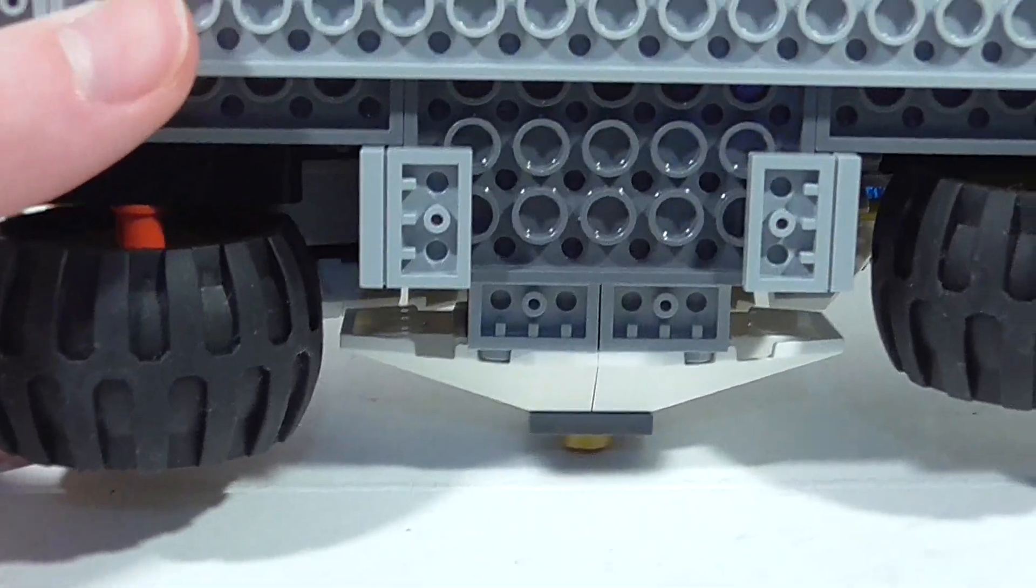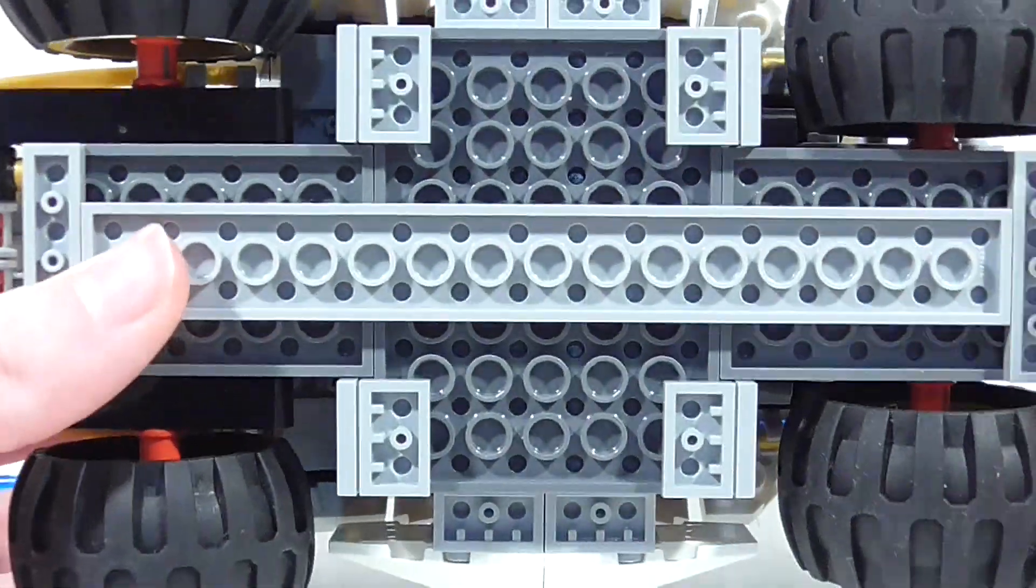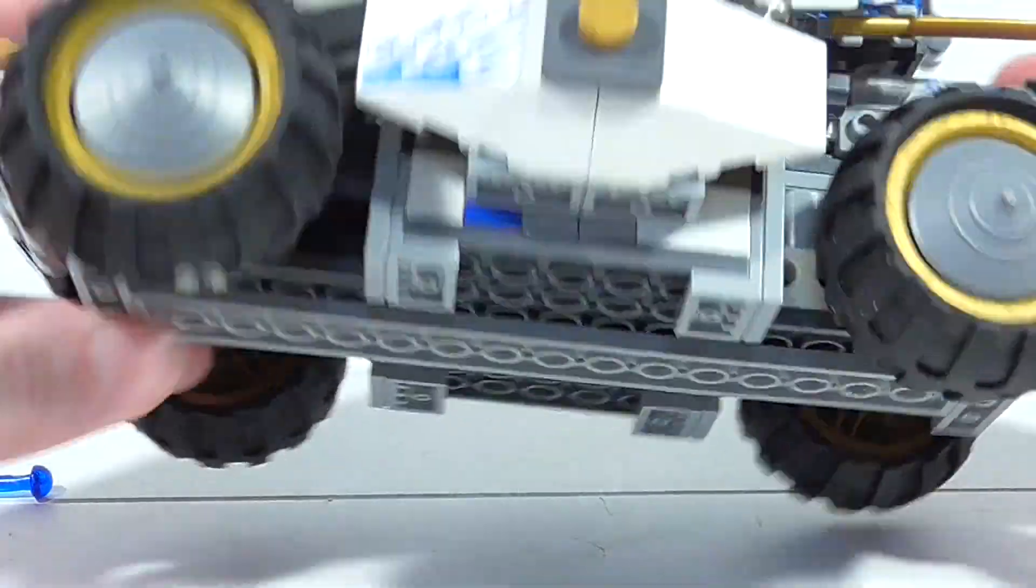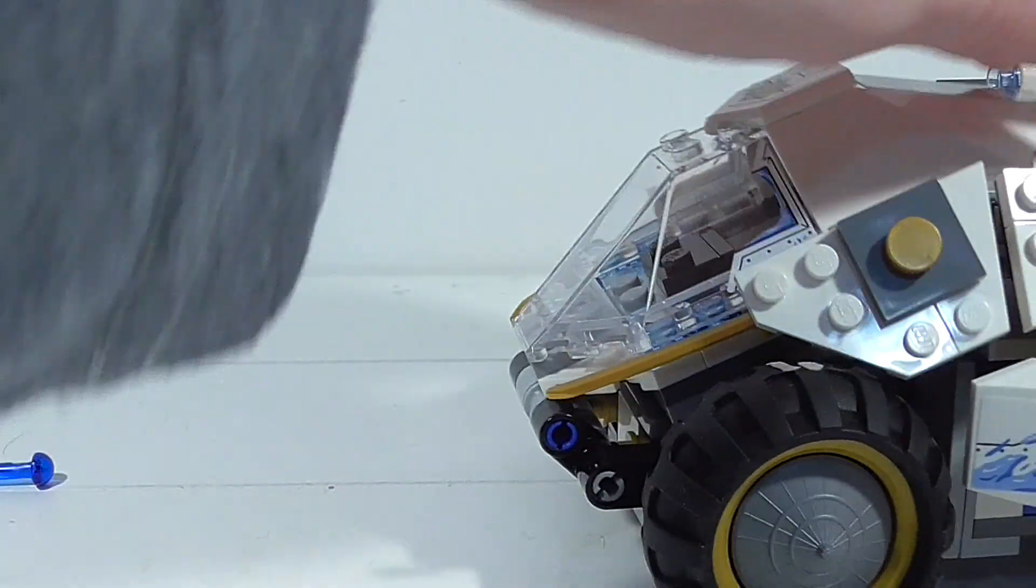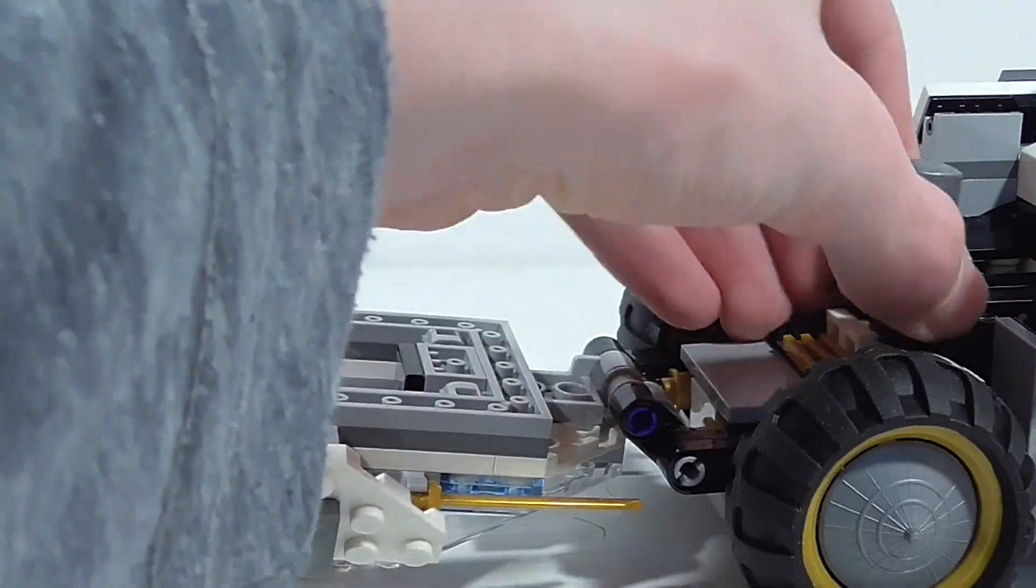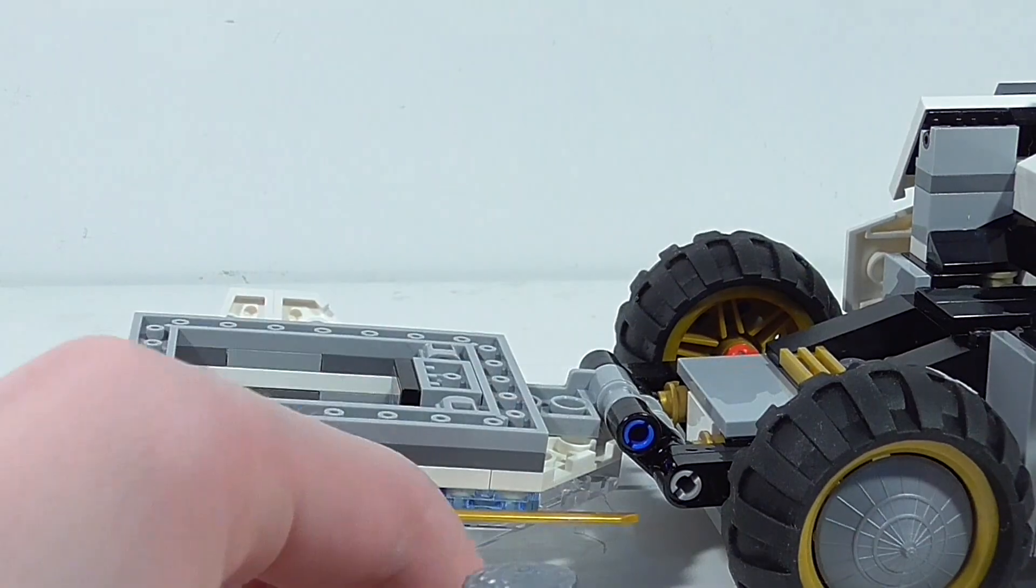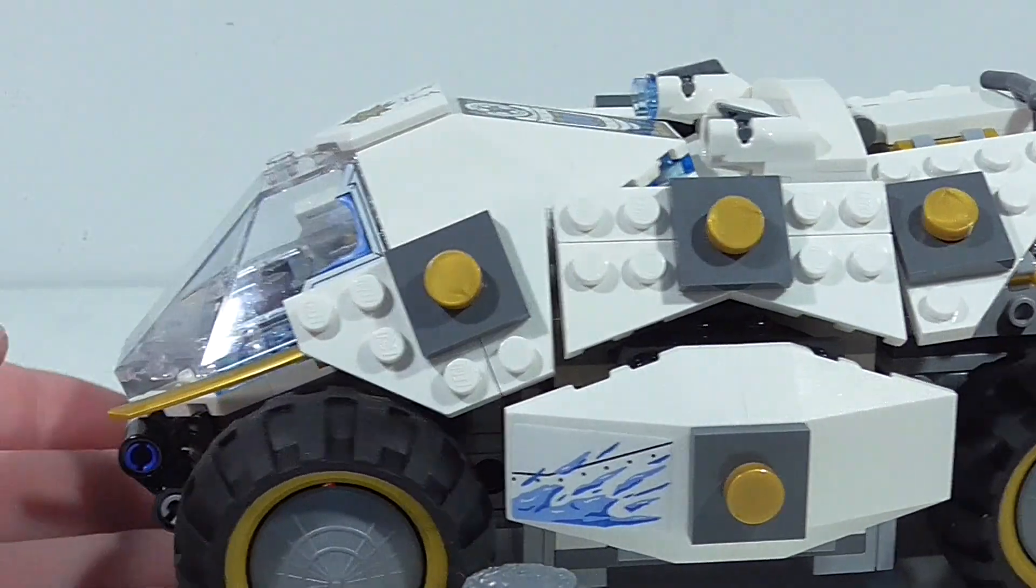And then as you can see there is nothing on the bottom of it there. Nothing too interesting. And yeah just another look at this with the cockpit open. So you can take Zane out afterwards. And then close it back up.